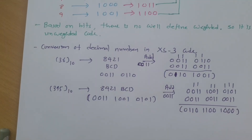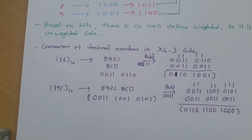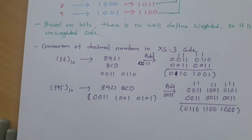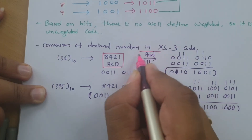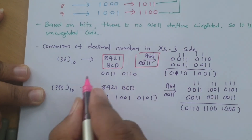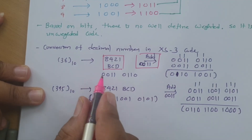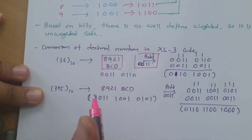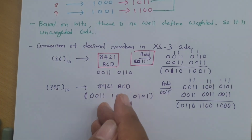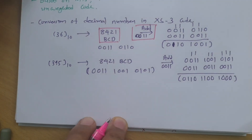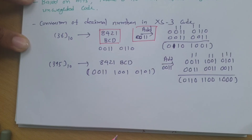To summarize the conversion process: first, convert the decimal number into 8421 BCD code. Second, add 0011 to each nibble individually. Remember, each nibble must be added with 0011, and you will have the Excess-3 equivalent of the decimal number.